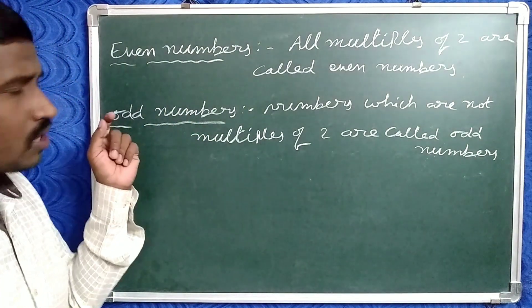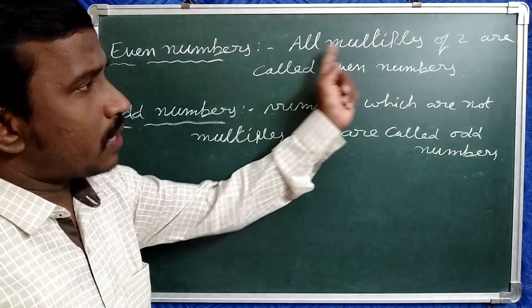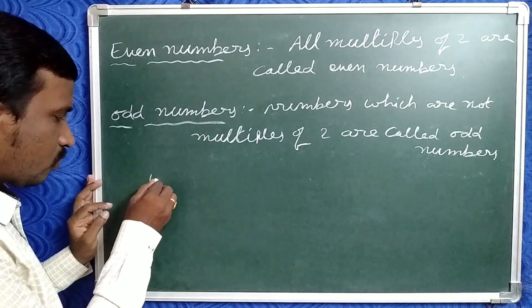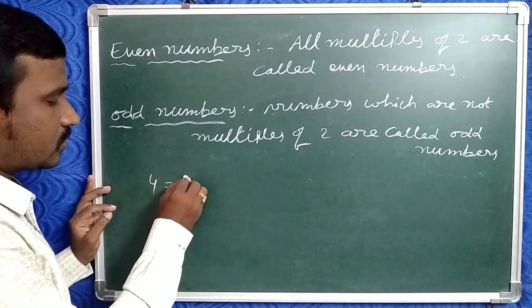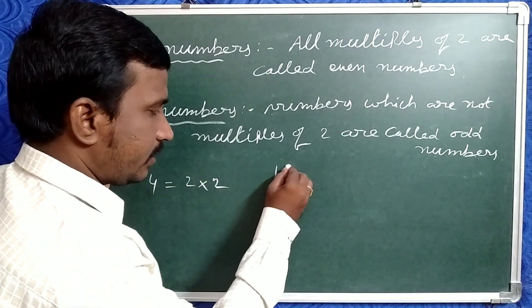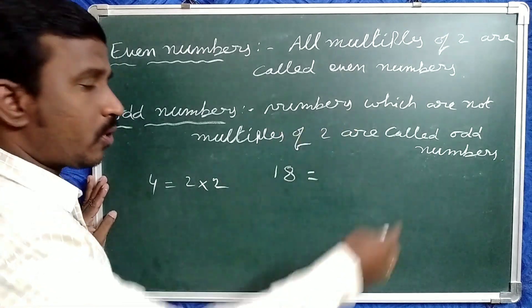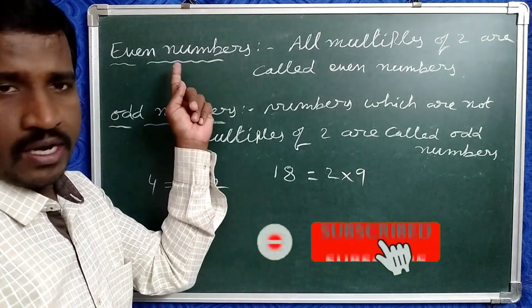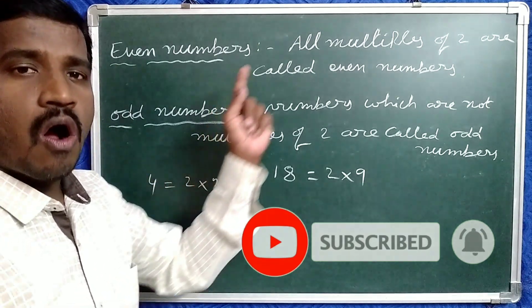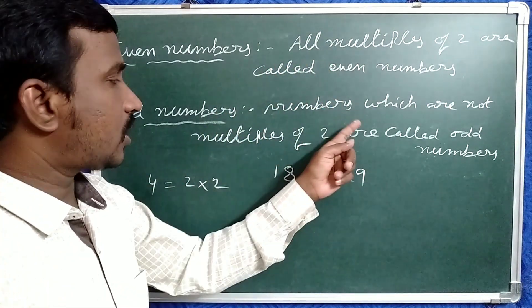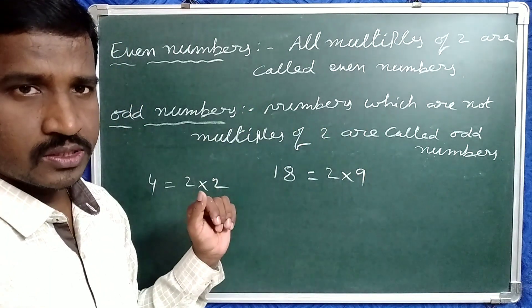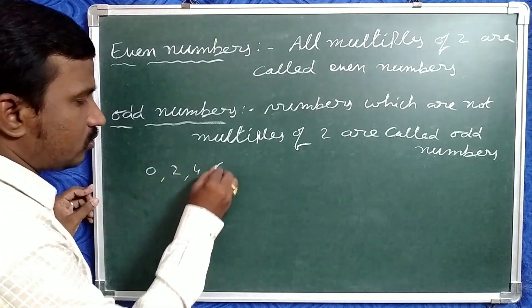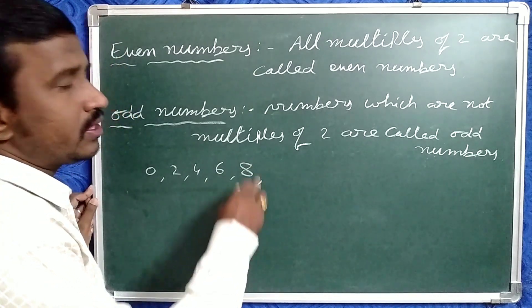Friends, now check even numbers and odd numbers. Even numbers means all multiples of 2 are called even numbers, otherwise odd numbers. Suppose take 4 — 4 is a multiple of 2 since 2 into 2 is 4. Suppose take 18 — 18 is also a multiple of 2 since 2 into 9 is 18. That is why 4, 18 and this type of numbers are called even numbers. Any number whose units place is either 0, 2, 4, 6, or 8 is called an even number.